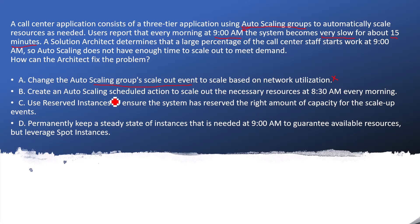Next: create an auto-scaling scheduled action to scale out the necessary resources at 8:30 a.m. every morning. Here we're adding more instances at 8:30 a.m., so that by 9 a.m. when users log in, they won't face any latency, slowness, or performance issues. This is the correct answer. You need to know what a scheduled action is in auto-scaling.